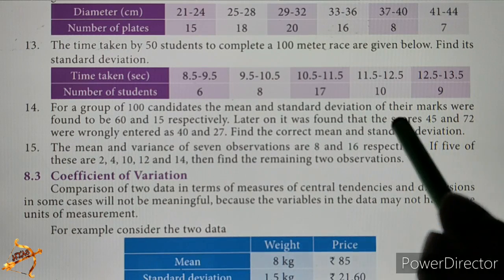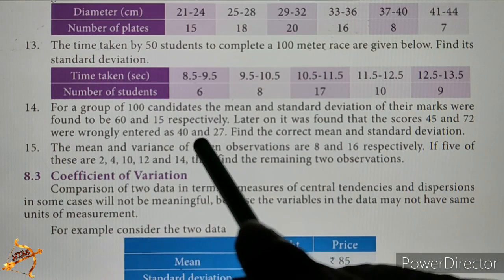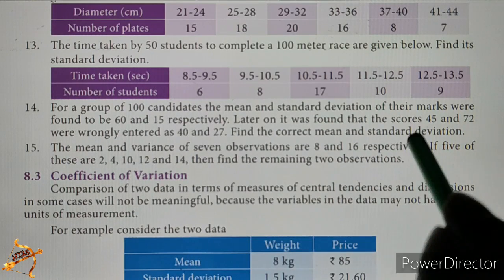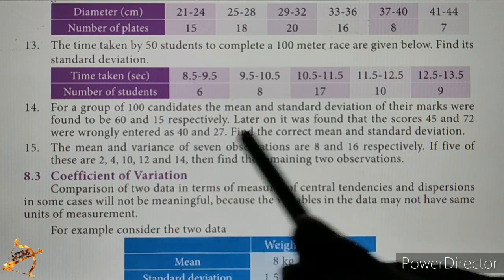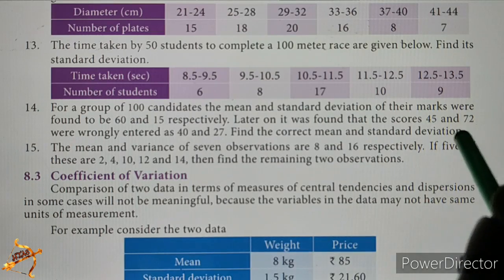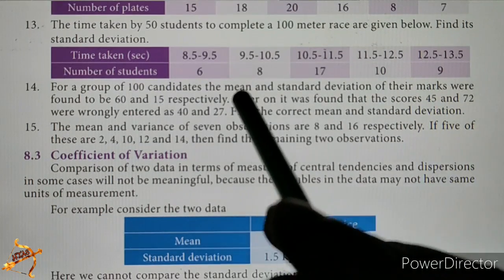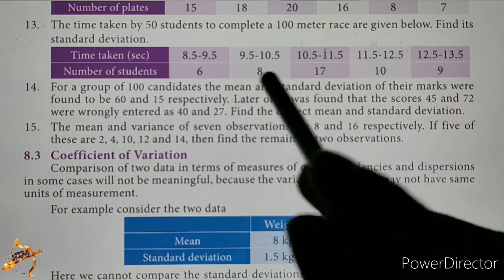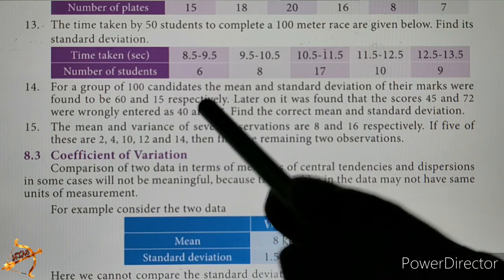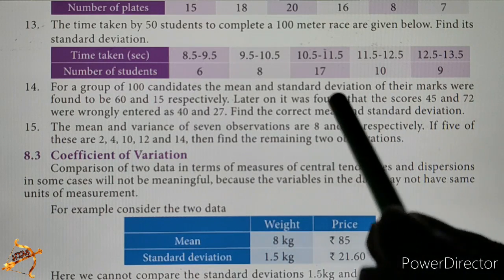Later on, it was found that the scores 45 and 72 were wrongly entered as 40 and 27. So 45 was entered as 40, and 72 was entered as 27. If we correct these values in the question, we will get the correct mean and standard deviation.